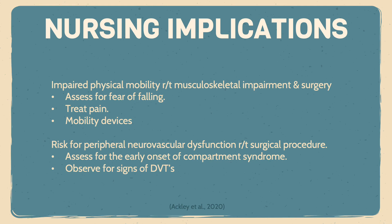The second priority nursing diagnosis is risk for peripheral neurovascular dysfunction related to the surgical procedure. Here we want to assess for the early onset of compartment syndrome by looking at the five P's: pain, pulses, pallor, paresthesia, and paralysis. Also assess for swelling and firmness. We also want to observe for signs of DVTs by looking for pain, tenderness, and swelling in the calf and thigh, redness in the involved extremity, and by performing serial leg measurements of the calf and thigh.